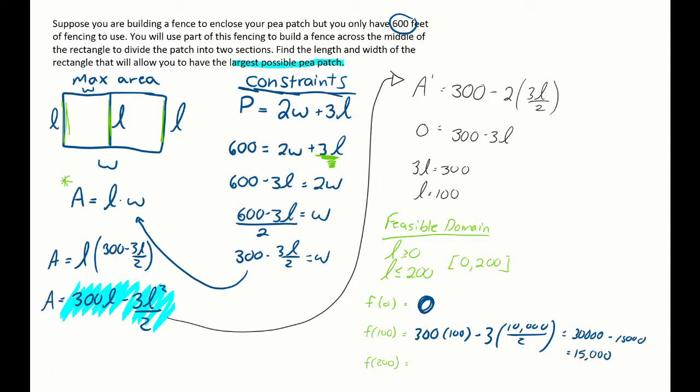And at 200, I have 300 times 200 minus 3 times 200 squared, which is 40,000 divided by 2. So it's 20,000. 300 times 200 is 60,000 minus 60,000 is 0. Well, I have a clear max, a clear maximum of 15,000.